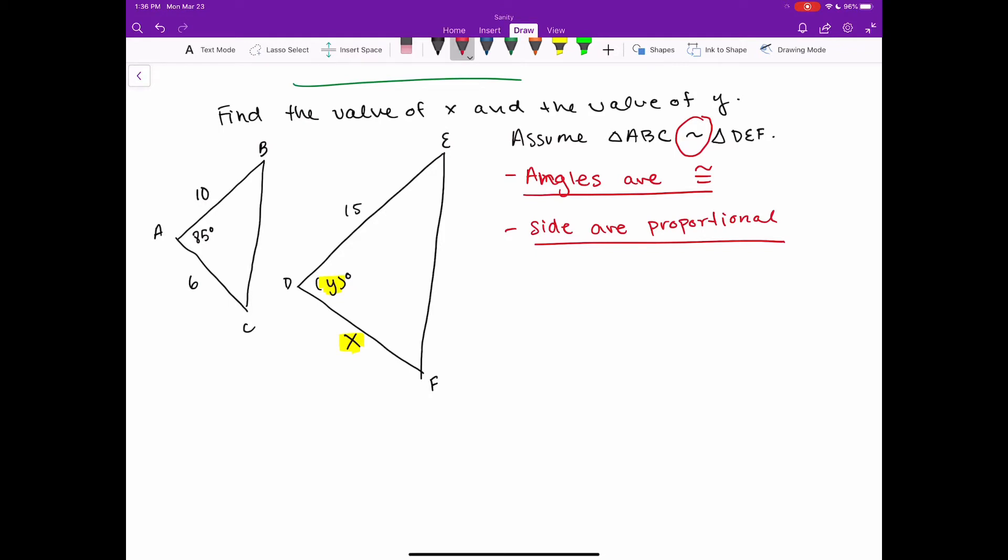Okay, so let's try and figure out what the value of x and y are. Let's do y because y is an angle measure. I've got my y and I've got my 85 degrees, this one's very easy. Here we go, y equals 85.